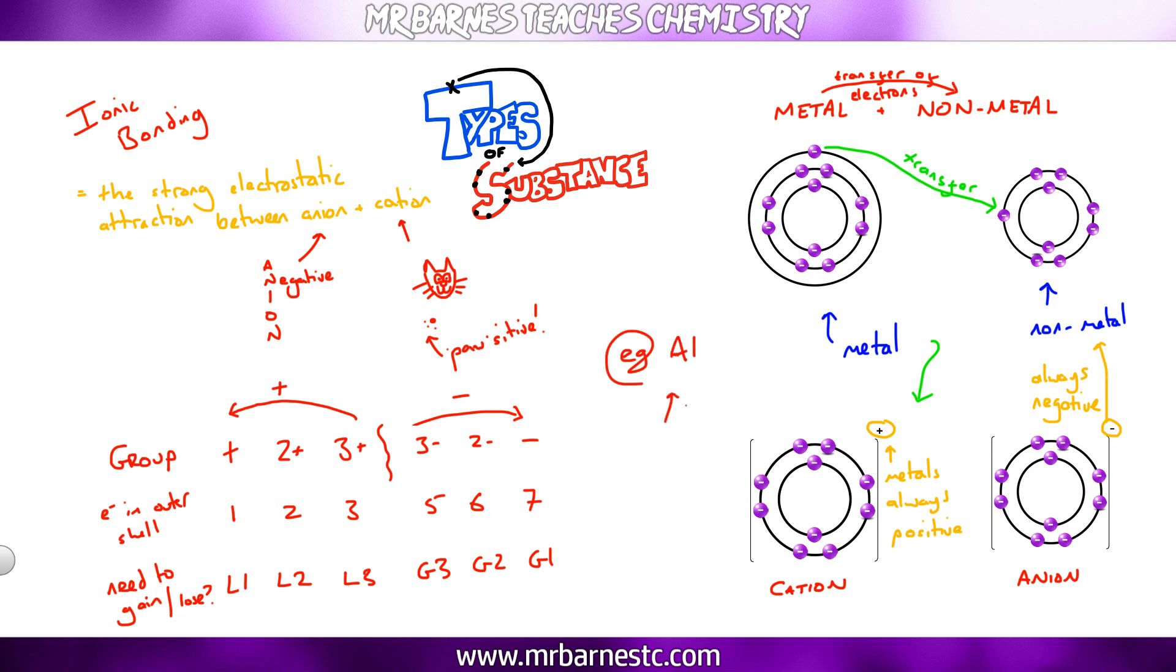For example, aluminium is in group three, it loses three negative electrons and becomes Al three plus. Sulfur is in group six, gains two negative electrons and becomes S two minus.